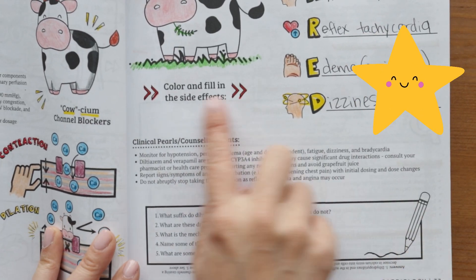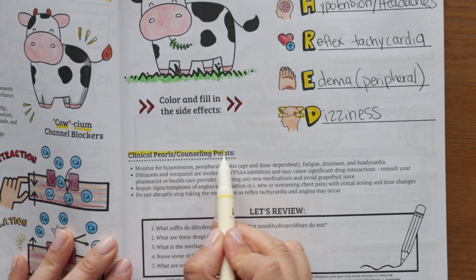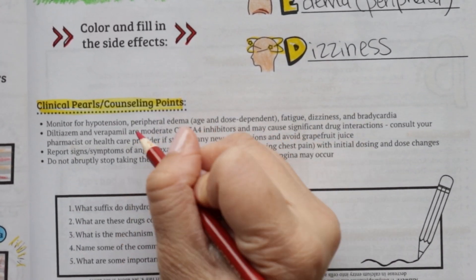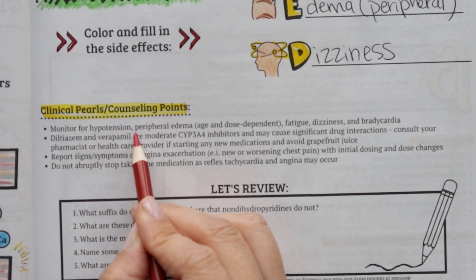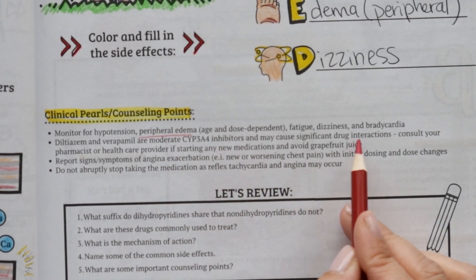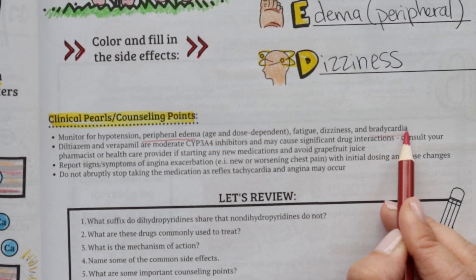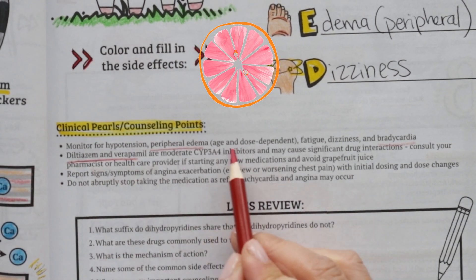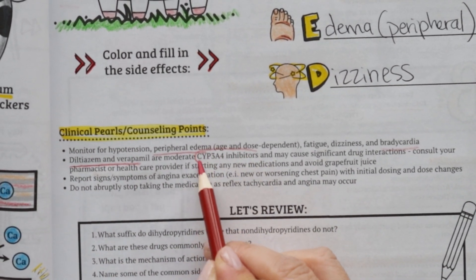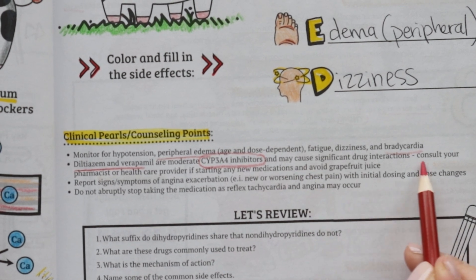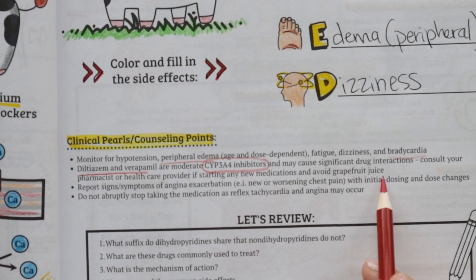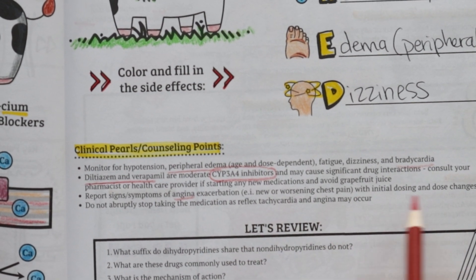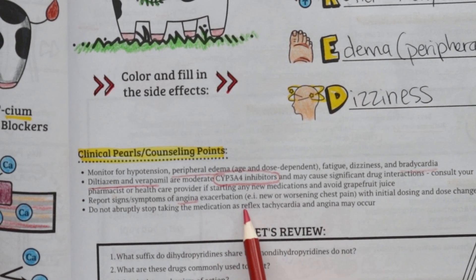Some clinical pearls and counseling points to keep in mind: monitor your patients for hypotension, peripheral edema, fatigue, dizziness, and bradycardia. Diltiazem and verapamil are CYP3A4 inhibitors, which means they can cause significant drug interactions and should be avoided when consuming grapefruit juice. Counsel patients to report signs and symptoms of new or worsening chest pain with initial dosing and dose changes. Advise patients not to abruptly stop taking these medications, as reflex tachycardia or angina can occur.